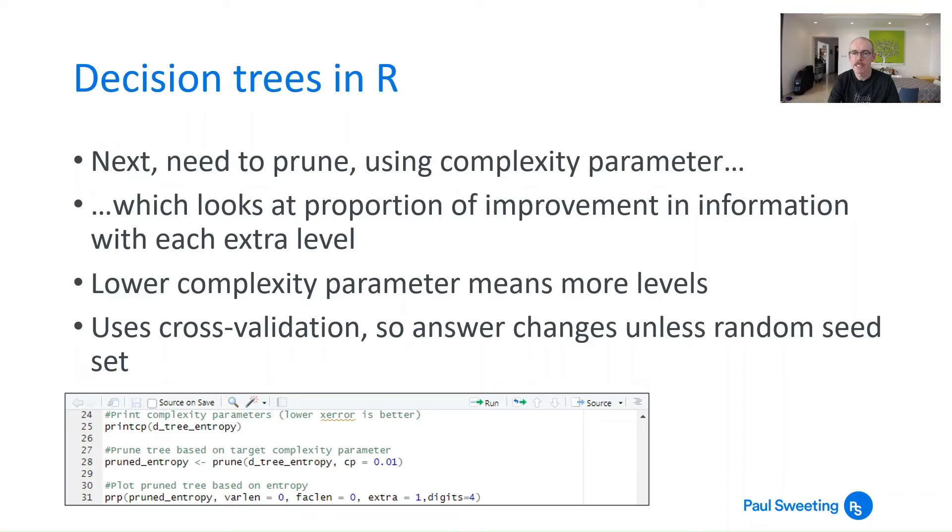Now this is done using cross-validation which I talked about in the last series of talks on support vector machines in the final episode. And because it uses cross-validation which is a kind of randomized process the answer will change on each iteration that you have unless you set the random seed at the start.